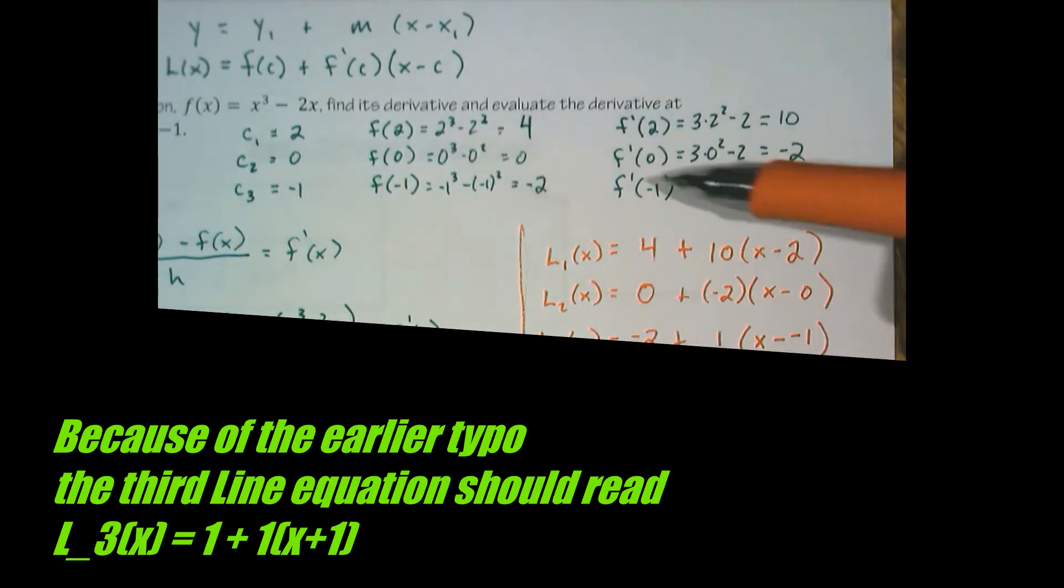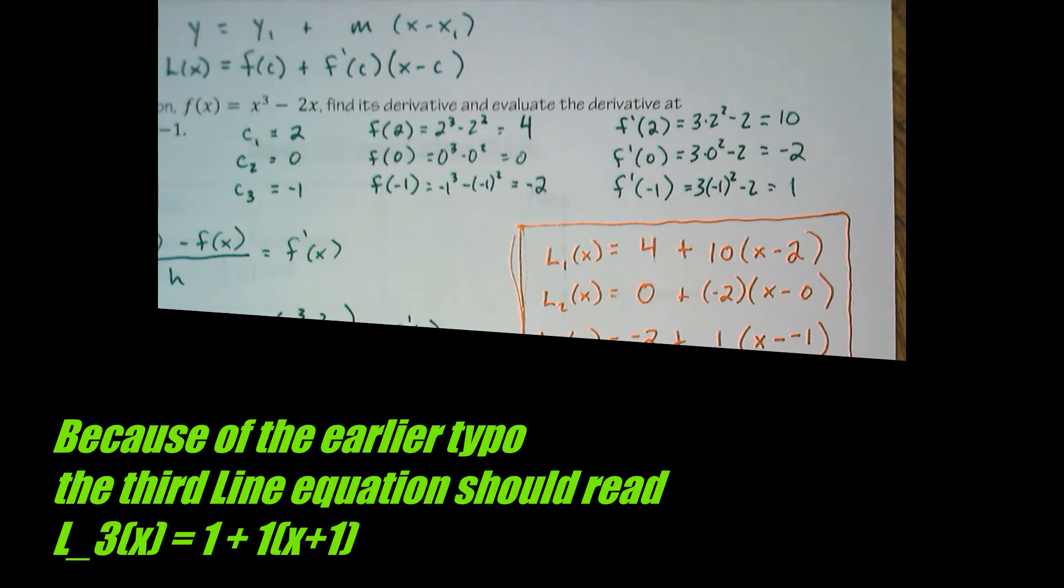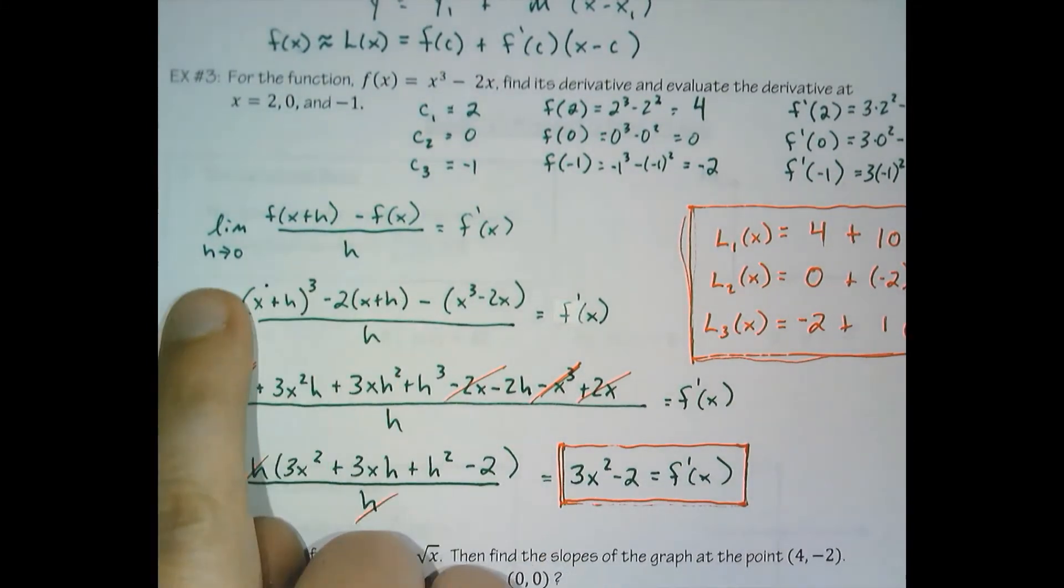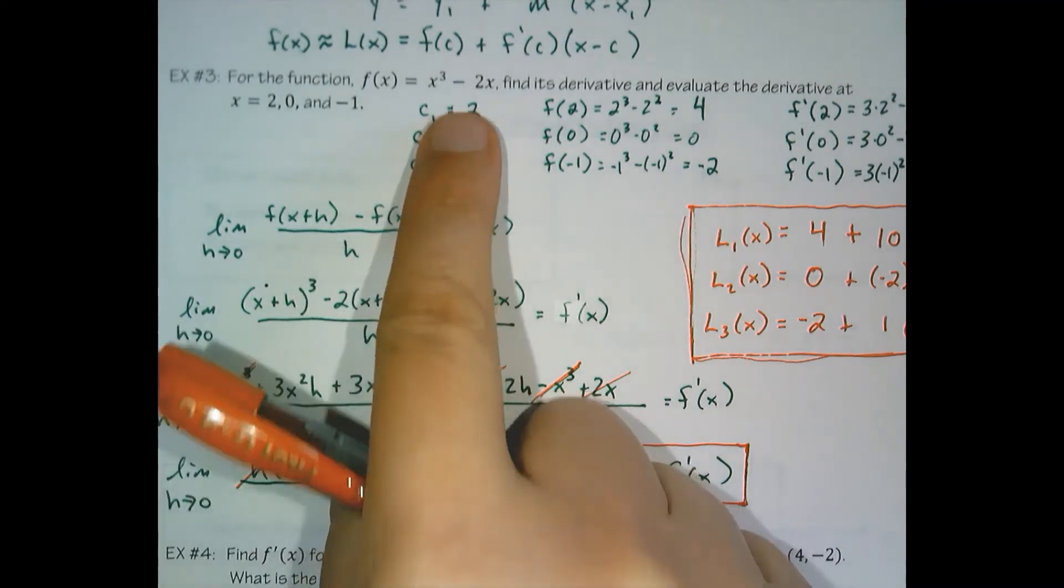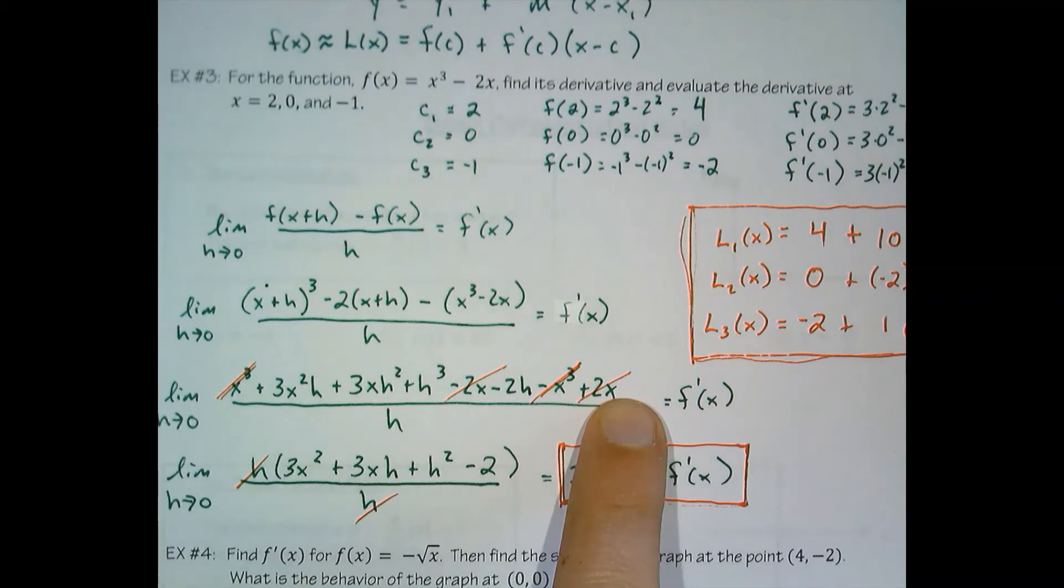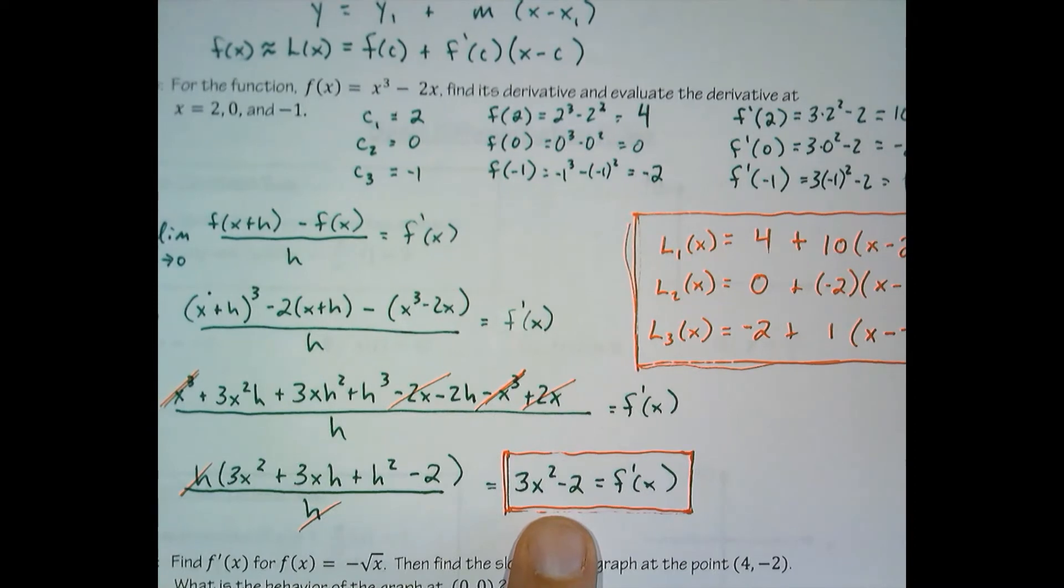Now the question framework didn't say find the tangent line equations, but I'm adding that into the notes because that's something that I want to make a good habit of. So as a review, what we did is we used the difference quotient and limited it to evaluate the derivative. We plugged in x plus h into the function and x into the function, and then we expanded the numerator so that terms would cancel.